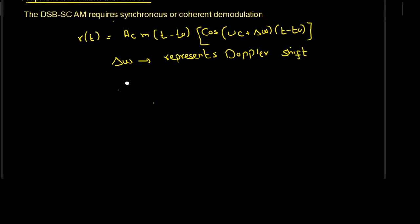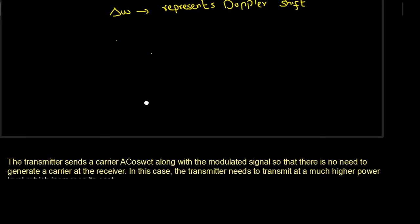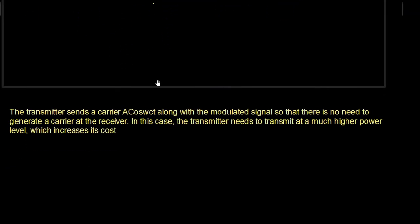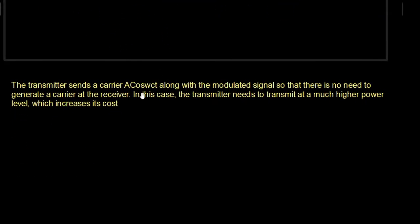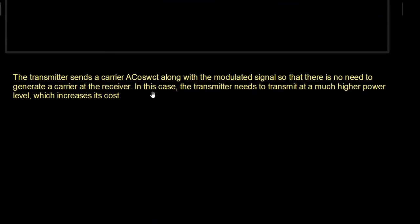In amplitude modulation with carrier, the transmitter sends a carrier A·cos(ωct) along with the modulated signal, so there is no need to generate a carrier at the receiver.